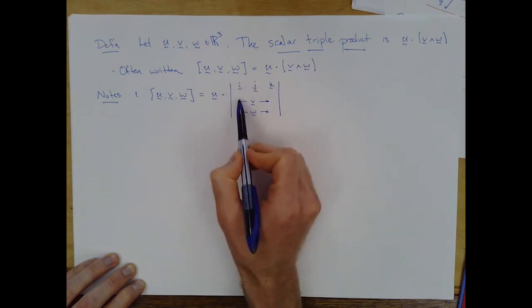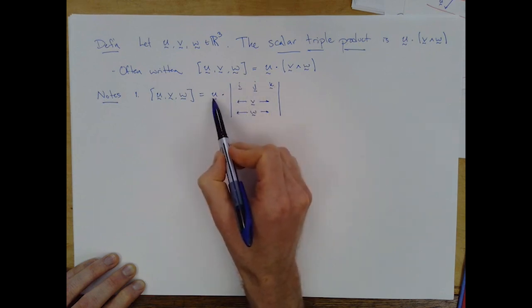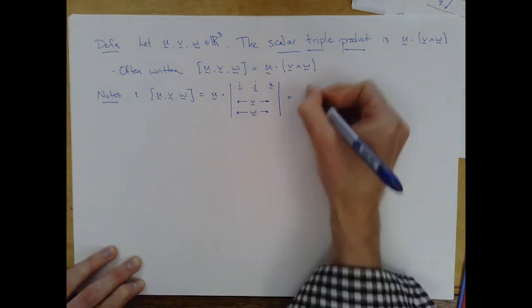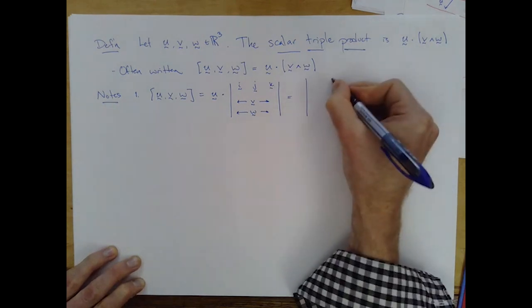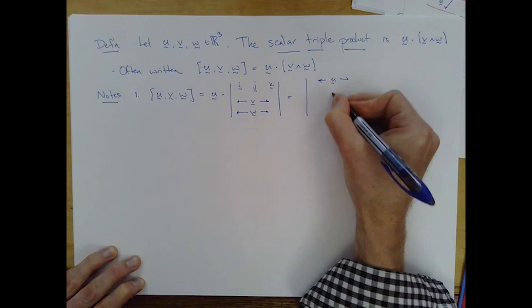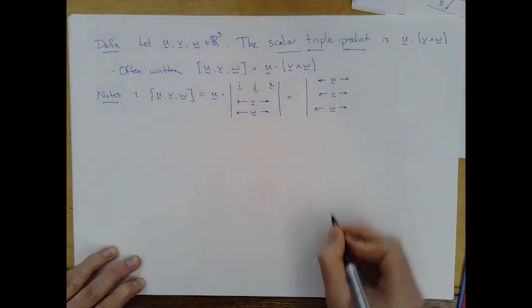As we saw in the last video, dotting this determinant with another vector is really just replacing the elements of this vector in the top row. Because the first element of this determinant is i, and when I dot it with u, I get u1. And the second element has a j, gives me u2. So this ends up being equivalent to the determinant of the matrix which now has u as the top, v as the middle, and w as...